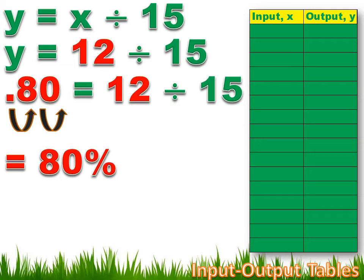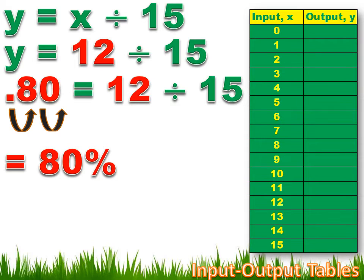Now what's the domain of our input? What are the correct answers, the number of correct answers that a student could have? Well, there's 15 questions. They could get none of them right. They could get one of them right. They could get 15 of them right. But they couldn't get minus one right, and they couldn't get 16 right. So our domain's going to start at zero and run to 15.